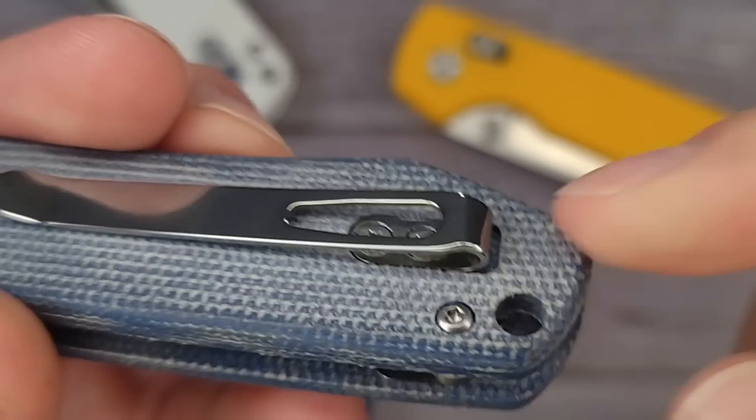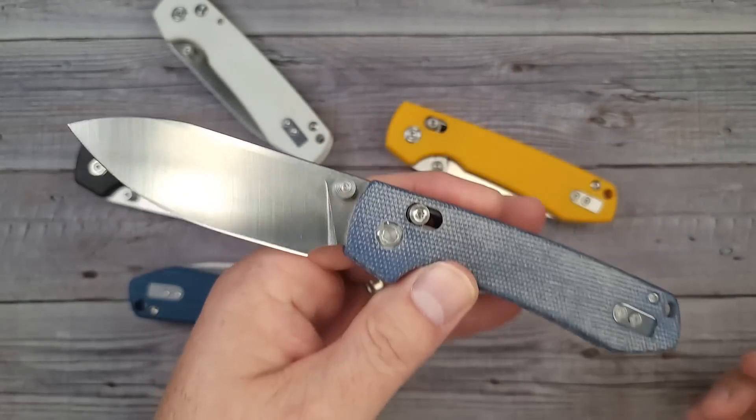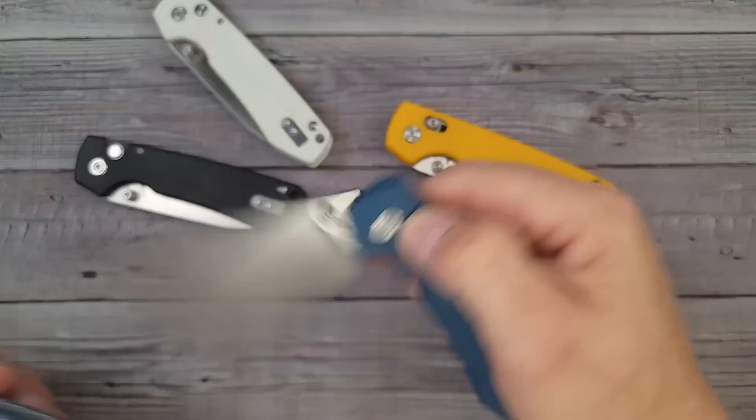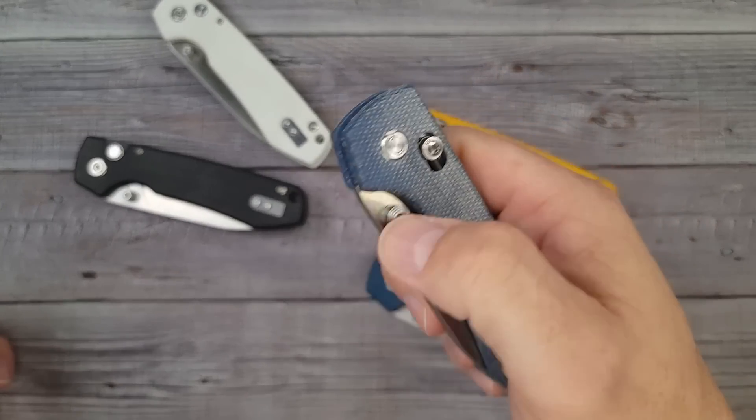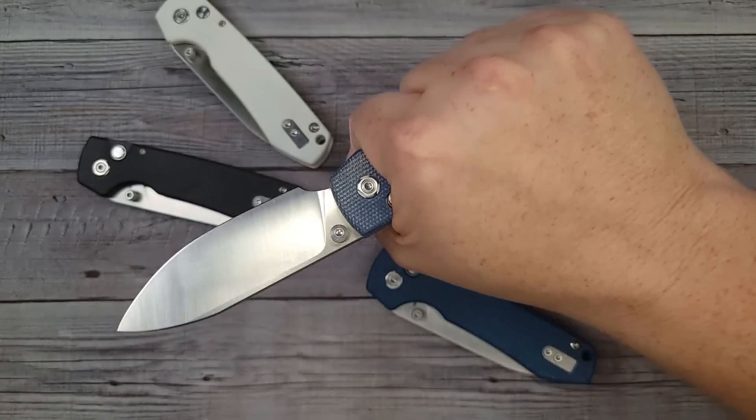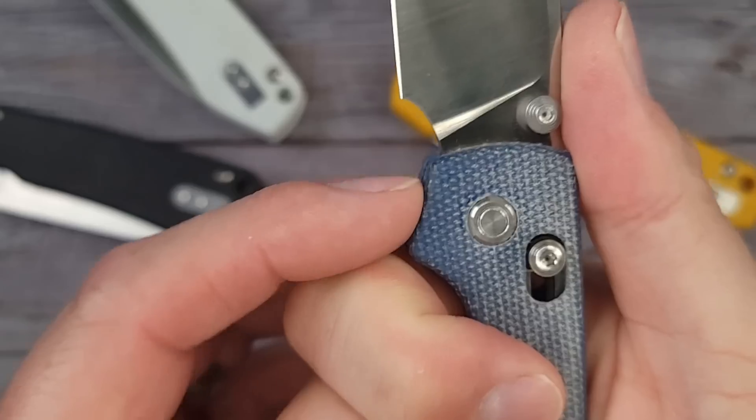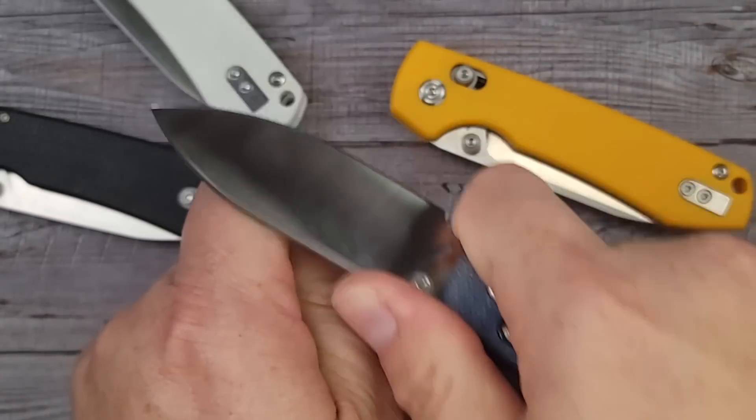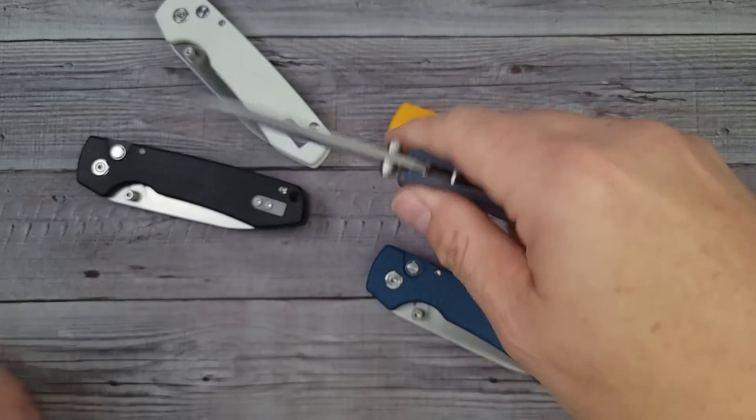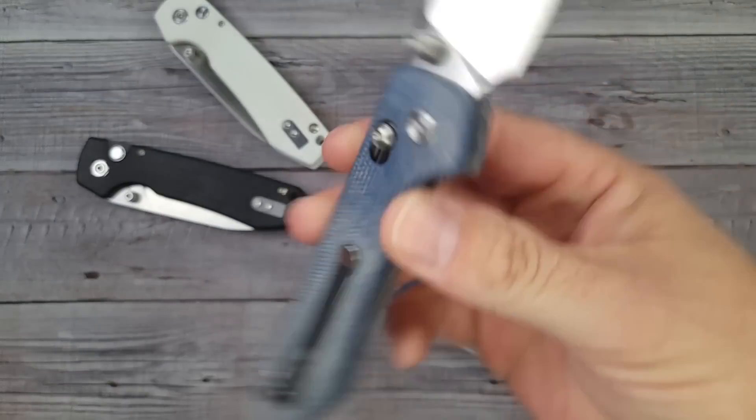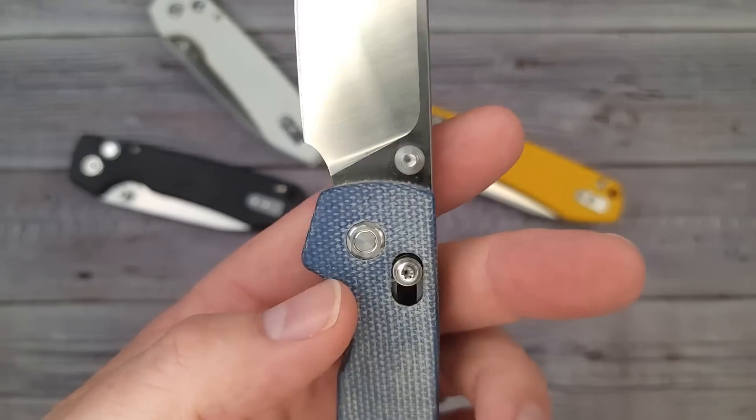It has a reversible pocket clip so this is a completely ambidextrous knife. It's going to come down to whether you like a button lock or a crossbar lock. They both work so fantastic. In my hand, I have large size hands, it fills my hand absolutely well. You have this whole forward area to choke up if you're doing a little bit of push cutting or making the perfect hot dog stick.